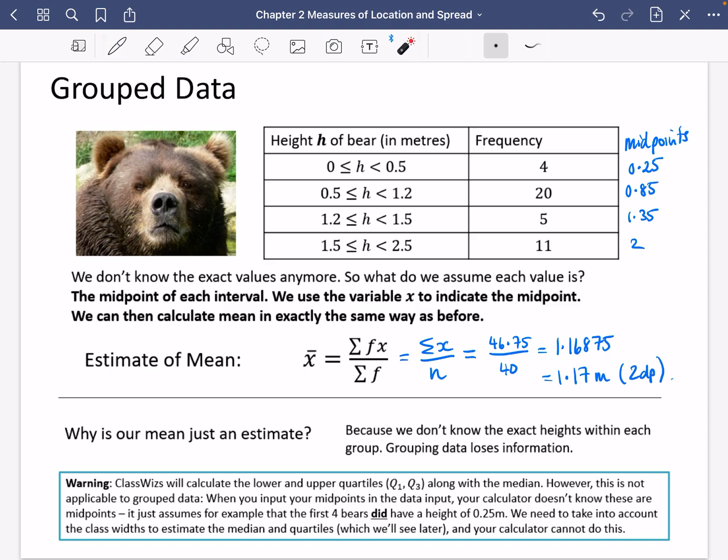So there's one last bit here. I've said, why is our mean just an estimate? Because we don't know the exact heights within each group. Grouping data loses information. Please highlight this bit here. This is the kind of thing they love to ask about in the exam.